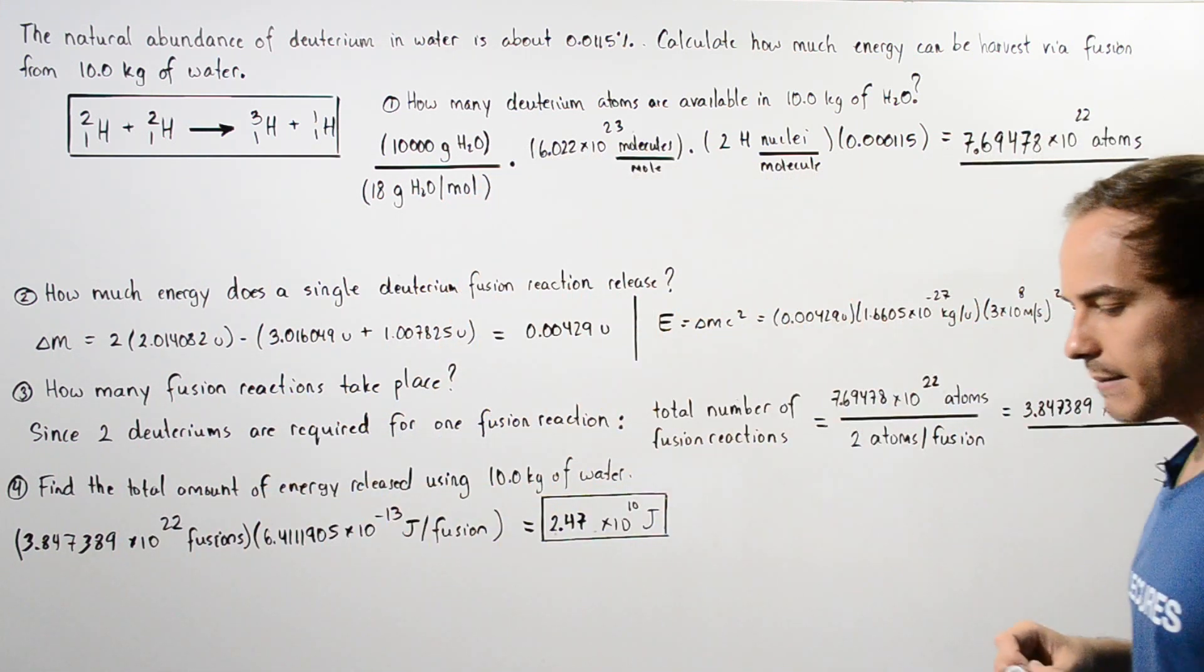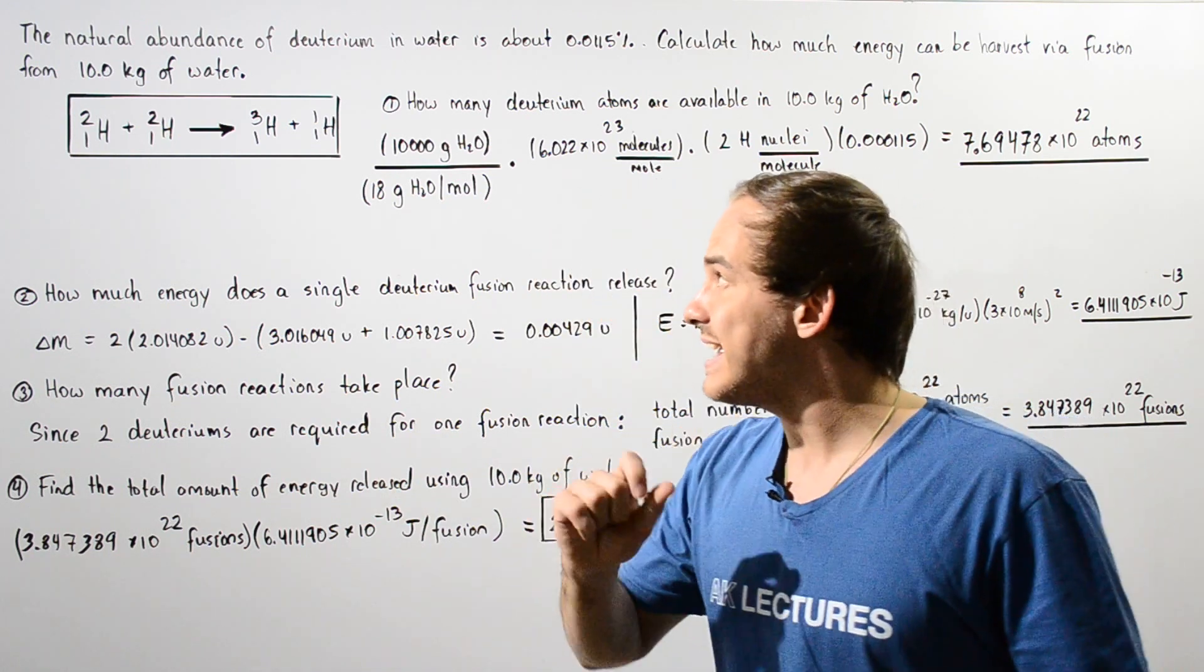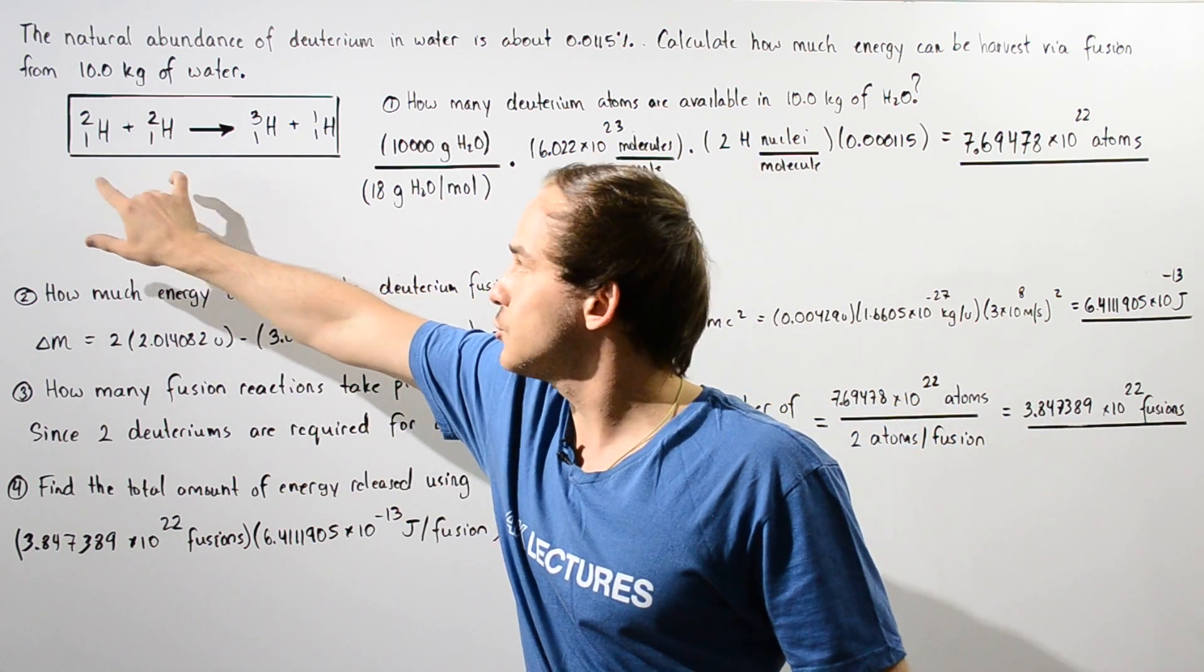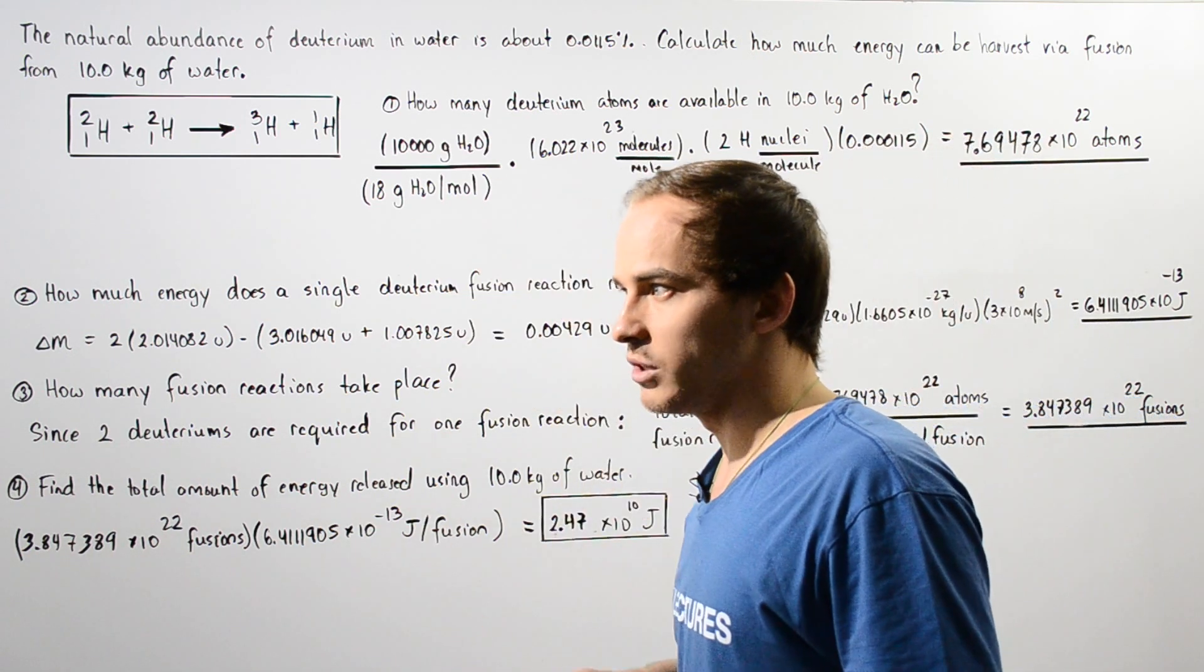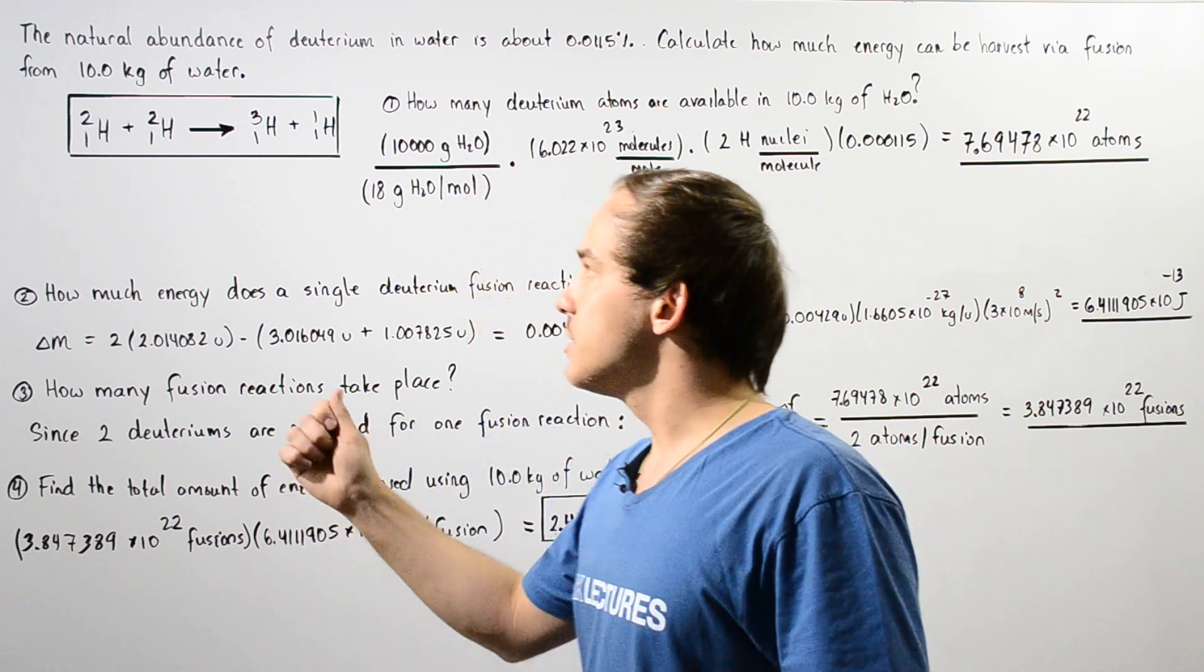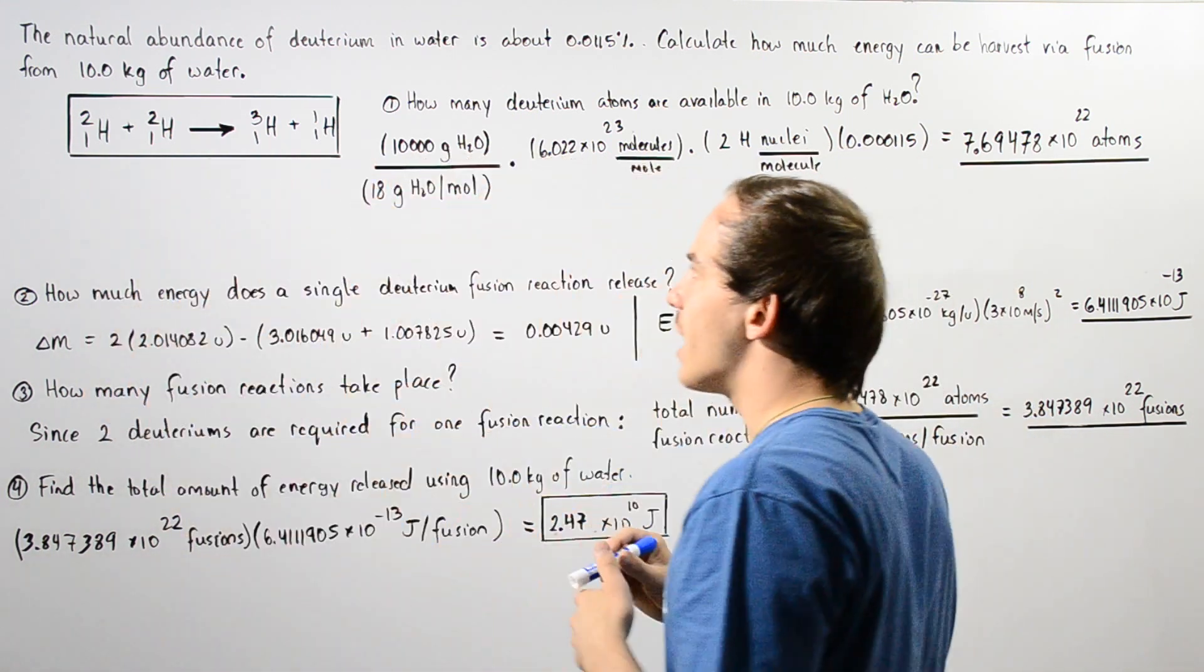So now let's move on to step two and calculate how much energy is released in a single fusion reaction of our two deuteriums. So to calculate the energy that is released, we have to calculate the decrease in mass as we go from the reactants to the product side.